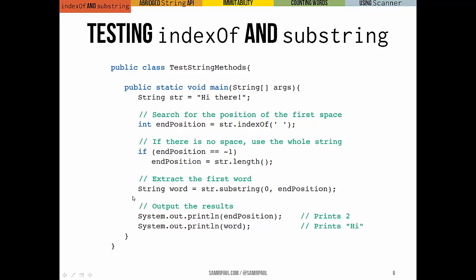Then to extract the first word, we're going to say give me the substring of str from zero until end position. That includes zero, doesn't include end position. And then we're just going to print the results, so we'll print the index end position and we'll print the word itself, the first word in the string.